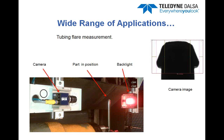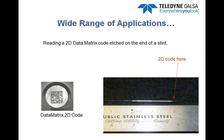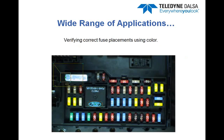We also mentioned 2D data matrix code reading. If you look closely on the right, you'll see that is actually a medical stent, and on the very tip of that is a laser-etched 2D matrix that they wanted to read — something a human really can't do. Many dedicated code readers might have difficulty reading that, but machine vision camera-based code readers would have no problem. We also mentioned using color — an automotive fuse box, where different amperage fuses are different colors, and it's critical that they are installed in the proper place, all present, without mixing yellow ones with green ones. These are typical examples of actual applications of machine vision systems used to improve product quality.